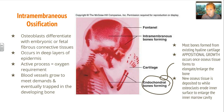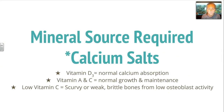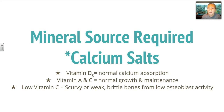Once ossification occurs, appositional growth can happen — this is the elongation or enlargement of the bone. New osseous tissue is deposited while osteoclasts erode the inner surface to enlarge the marrow cavity as you grow. To grow bone, mineral resources are required. Calcium salts make up the primary source of your bones. You also need vitamin D3 for normal calcium absorption and vitamins A and C for growth and maintenance. Low vitamin C can result in scurvy, or weak brittle bones from low osteoblast activity.